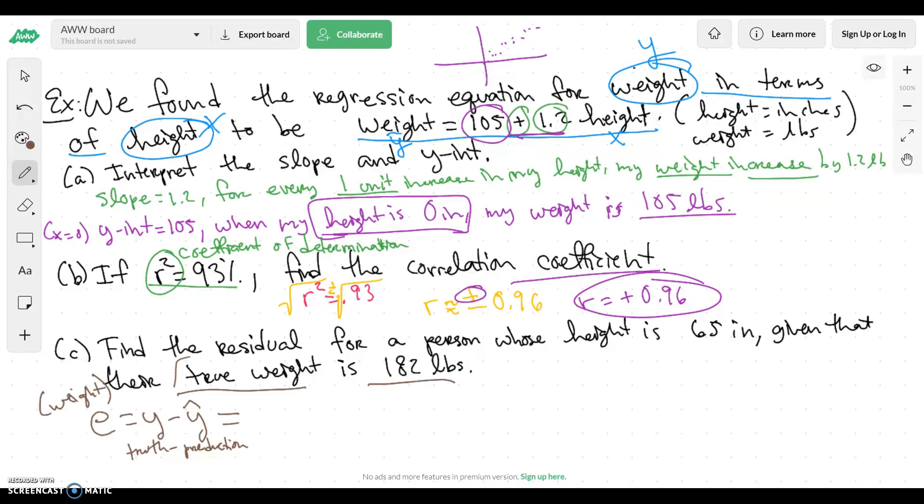Well, I know what my true weight is. My true weight is just going to be 182 pounds minus my predicted weight. My predicted weight is not 65 inches. That is the height. So we want to figure out what my predicted weight is. So my predicted weight, let me put it over here, predicted. Well, all we got to do is just plug it into my regression equation. So here's my equation. So I'm going to take 105 plus 1.2 times my height. My height is just 65. That's why they gave us that information. So I'm going to take 105 plus 1.2 times 65. That's going to give me 183. So this is my predicted. This is my Y hat. So I'm going to plug that in here, 183.